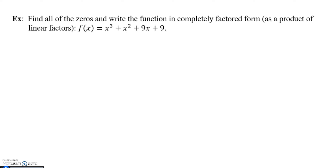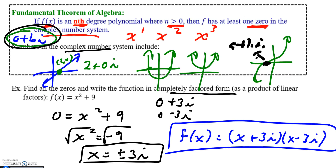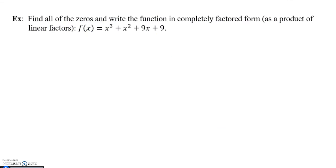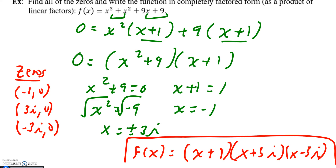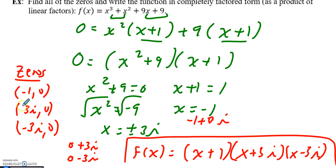The next example asks to find all zeros and write the function in completely factored form. Please pause and try this on your own — I believe this one might factor by grouping. By factoring by grouping, I got two imaginary roots of plus or minus 3i and one real root. The fundamental theorem of algebra says at least one root will be in the complex number system — all roots here can be written in that system. My answer in factored form uses linear factors, because all x terms are to the first power.